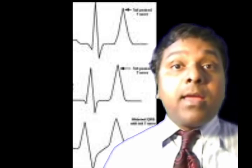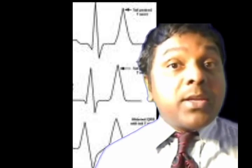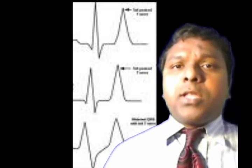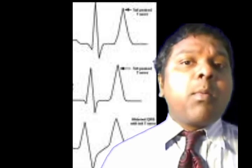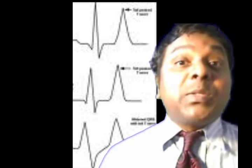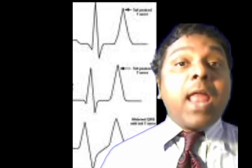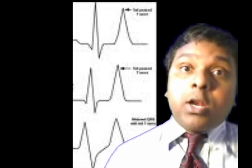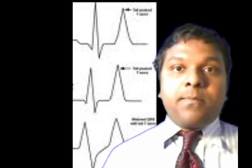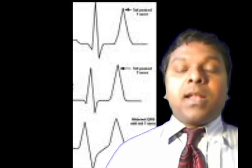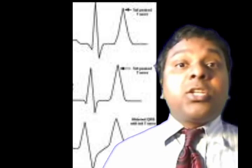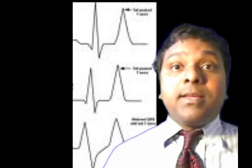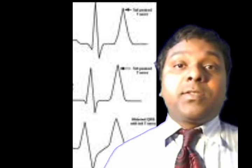Hyperkalemia is more dangerous than hypokalemia, which is why we should give emergency treatment to affected patients. Many drugs cause this problem — ACE inhibitors, potassium-sparing diuretics like spironolactone, and trimethoprim, which blocks potassium secretion in the distal collecting ducts. Digitalis toxicity may also cause hyperkalemia because it inhibits the sodium-potassium ATPase in the distal collecting ducts.